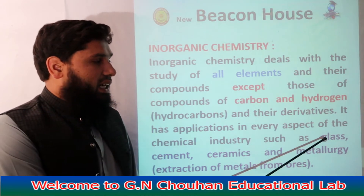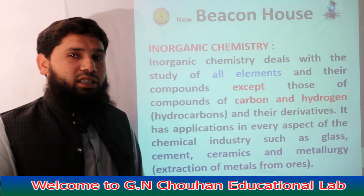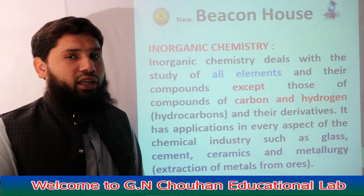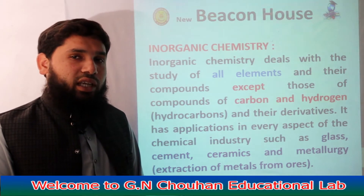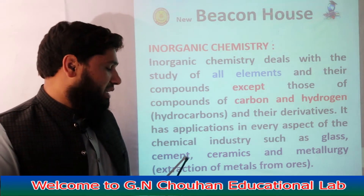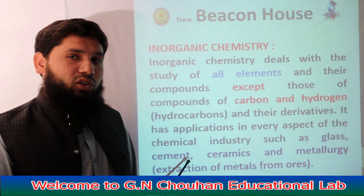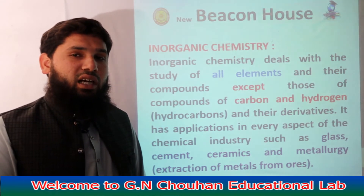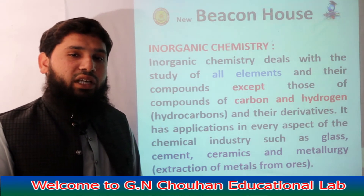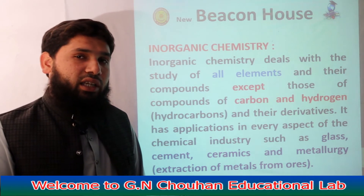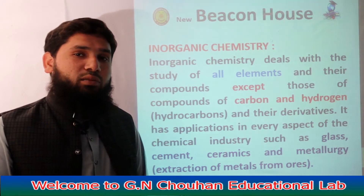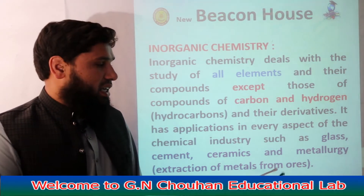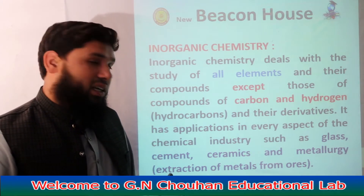Glass industry میں شیشہ بنتا ہے، اور شیشہ بنانے کے لیے جو elements اور compounds use ہوتے ہیں وہ inorganic compounds ہوتے ہیں — یعنی carbon اور hydrogen کے علاوہ compounds۔ اس کے بعد cement industry اور ceramics industry ہے۔ Ceramics industry میں tiles، flooring کا material اور چینی کے برتن وغیرہ بنائے جاتے ہیں۔